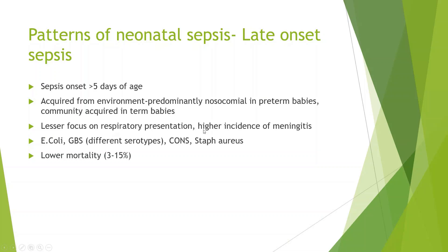There is a lesser focus on respiratory presentation and meningitis has a higher risk — up to 30%. If there is late onset sepsis, it is safer to do the lumbar puncture and it is recommended. Organisms may include E. coli, different serotypes of group B streptococcus, coagulase-negative Staph more in hospitalized patients, and Staph aureus — with lower mortality overall.